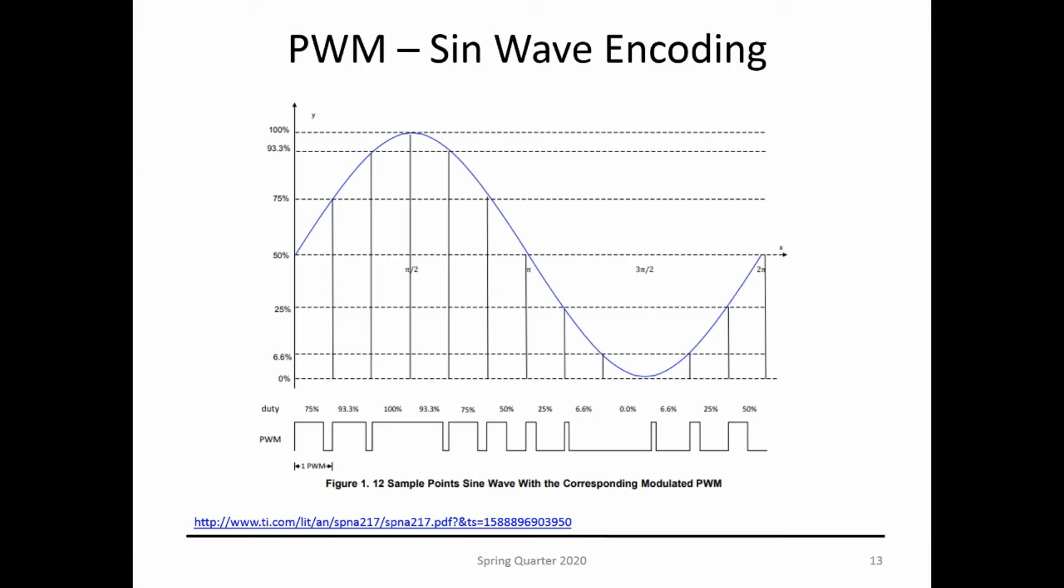Well, in that case I need to encode the sine wave on my PWM. This is an example of a PWM wave that if you fit this and then you put an RC filter, it's going to give you a sine wave. This is just with 12 points. If you have more points, it's going to have more resolution.